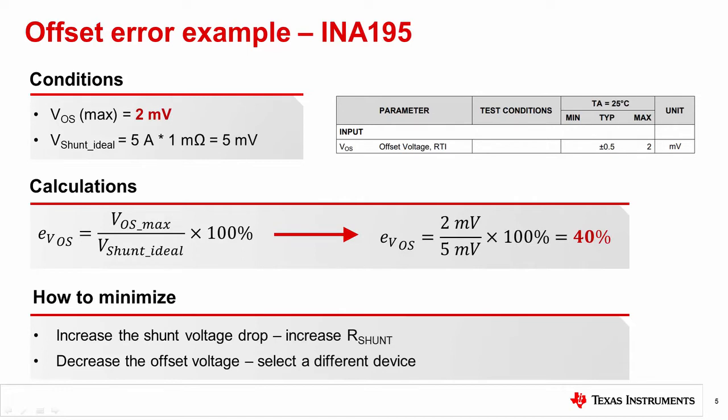Let's calculate the offset error in an example system with a minimum load current of 5 amps and an ideal shunt resistance of 1 milliohm. We will pick the INA195 as our amplifier, which has a maximum VOS of 2 millivolts. The ideal shunt voltage is equal to our load current times our shunt resistor, which results in 5 millivolts. Using our offset error equation from before, we calculate that the error is a whopping 40%. This is not a very useful measurement. The first thing most engineers will ask is how do we make it better and minimize offset error?